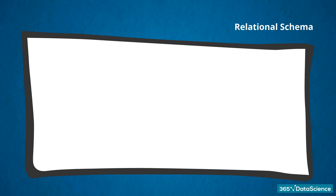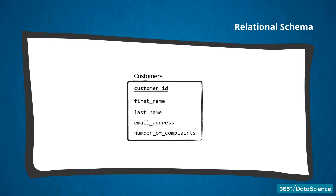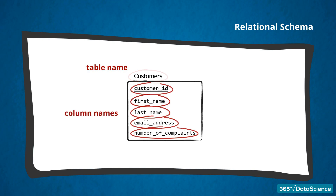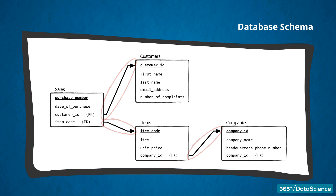Another form of representation of a database is the relational schema. This is an existing idea of how the database must be organized. It is useful when you are certain of the structure and organization of the database you would like to create. More precisely, a relational schema would look like this. It represents a table in the shape of a rectangle. The name of the table is at the top of the rectangle and the column names are listed below. All relational schemas in a database form the database schema. You can also see lines indicating how tables are related in the database. We have some other features, but we will leave their explanation for the next lecture.